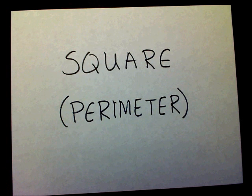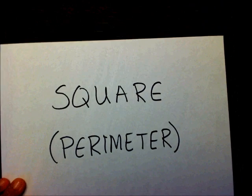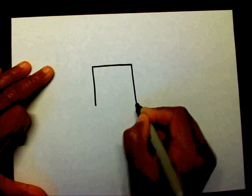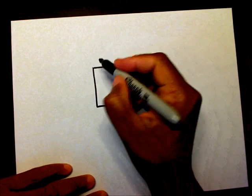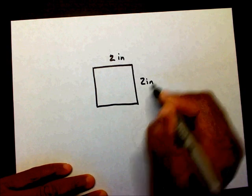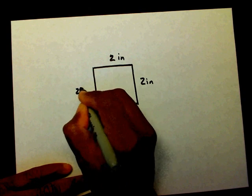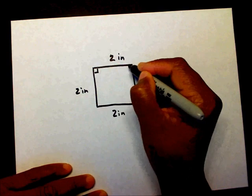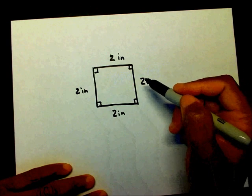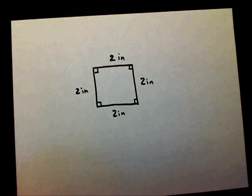Today we're going to find the perimeter of a square. Before we get started, let's talk about what the perimeter of a square is. First of all, this is a square. How do we know it's a square? Because this side is two inches, this side is two inches, this side is two inches, and this side is two inches. We also have four right angles here — that's how we know it's a square, because all the sides are the same and we have four right angles.